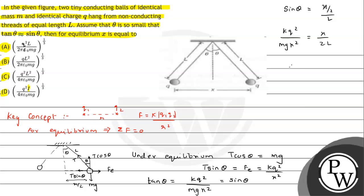So we can say sin theta ki value, that is k q² / (mg x²), will be equals to x / (2L). Just we have to calculate the value of x. From this we can say x³ will be equals to k ki value, and we will substitute it as 1 / (4π ε₀), multiplied by 2L into q², divided by mg.